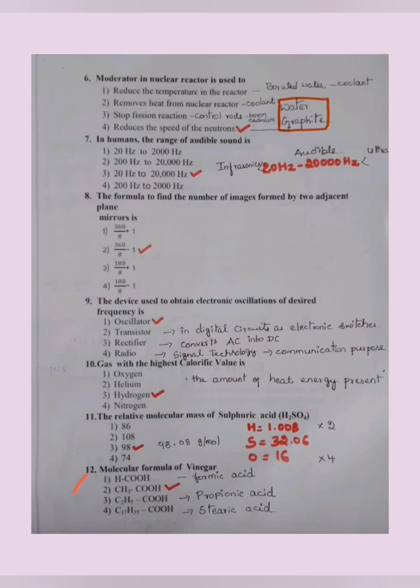Molecular formula of vinegar: It is second answer CH3COOH. This is for vinegar. Let us also check out the other answers. HCOOH - this is formic acid formula. C2H5COOH - that is propionic acid. C17H35COOH - this is stearic acid.